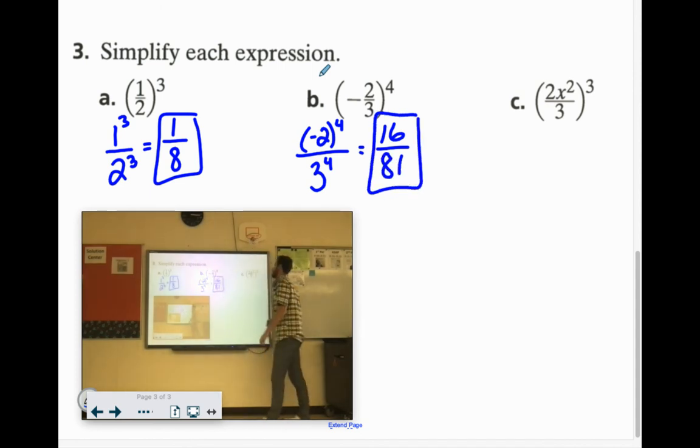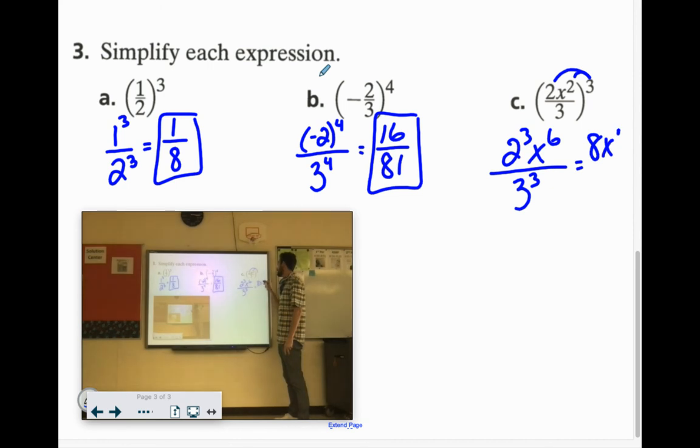And then over here we have to cube everything. So 2 to the 3rd, x to the 6th, 3 to the 3rd. 2 times 2 is 4, times 2 is 8, x to the 6th. 3 times 3 is 9, times another 3 is 27.